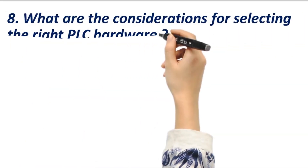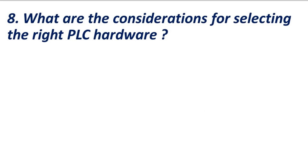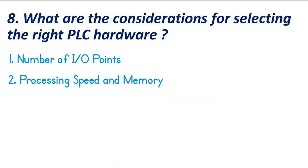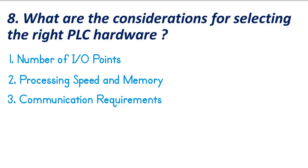What are the key considerations while selecting a PLC? The first consideration is number of I/O points — determine the total number and types of input-output devices needed and ensure the PLC has sufficient I/O capacity. Second is processing speed and memory — select a PLC with adequate processing speed for real-time operations and enough memory according to your program's complexity. Third is communication requirements — ensure the PLC supports necessary communication protocols for integration with other devices like SCADA and sensors.